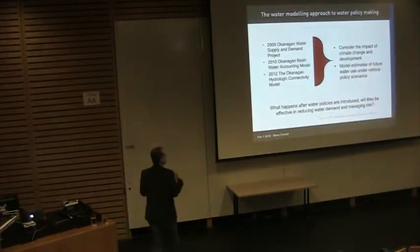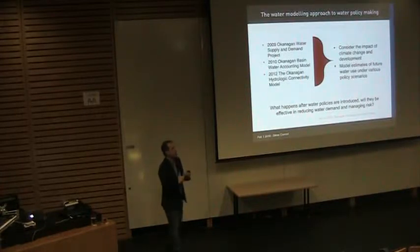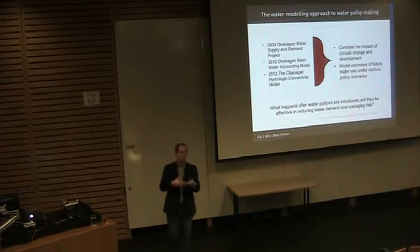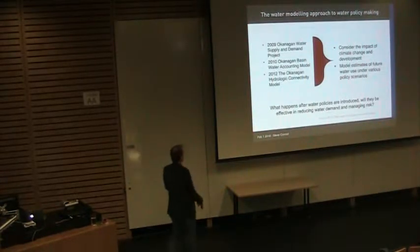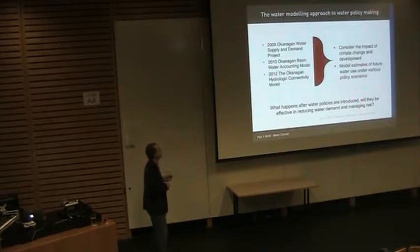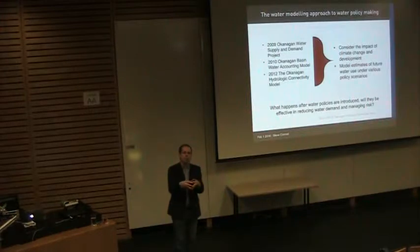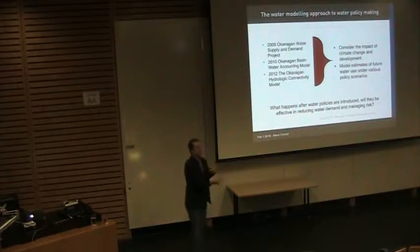Like many water modelers, one of the first approaches was: let's build a model. Let's look at the hydrology, the precipitation patterns, and get a better representation of what's really occurring in the Okanagan so we can help manage the risk. A number of models were put together starting in 2009, when the Okanagan Water Supply and Demand Project was initiated by the Okanagan Basin Water Board.